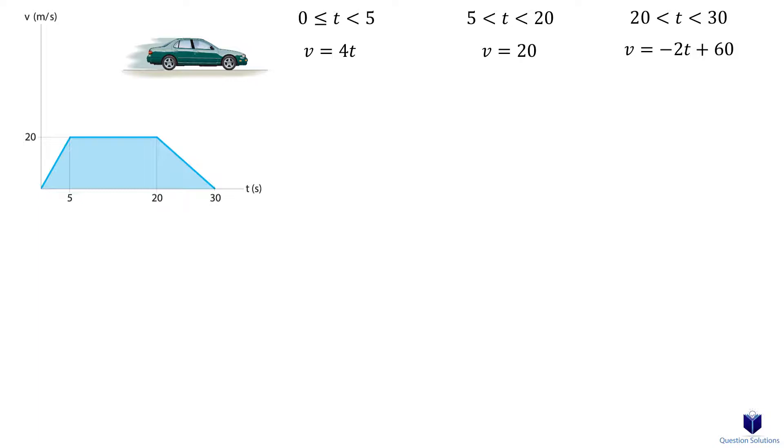Now to figure out the displacement, we need to use v equals ds over dt. We can manipulate this to write it as ds equals v dt. Now we can take the integral. For the first segment, we can write it like this. Note that both lower bounds for the integral starts at 0.